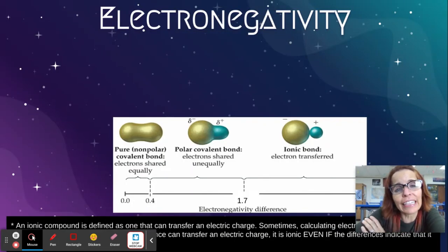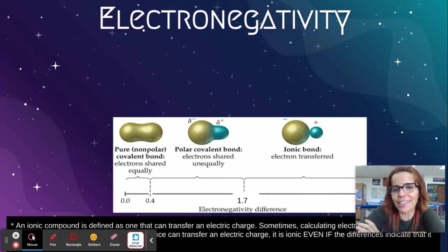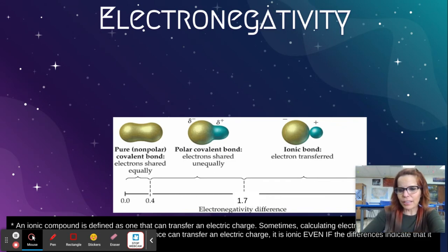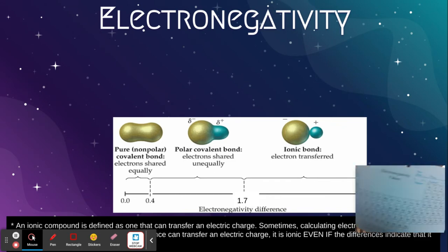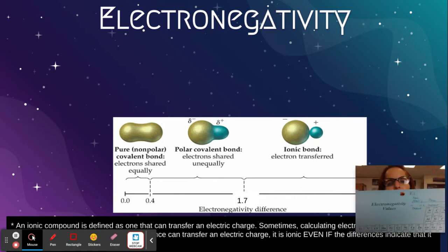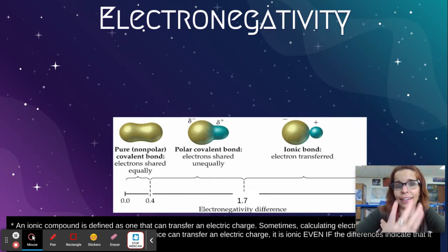Today we are going to talk about electronegativity. We're going to talk about the last 10 slides on the PowerPoint presentation that starts with the Lewis dot structures. We'll go ahead and talk about electronegativity. If you happen to have your electronegativity table — if I handed it out to you in class — it's a good idea to have that handy.